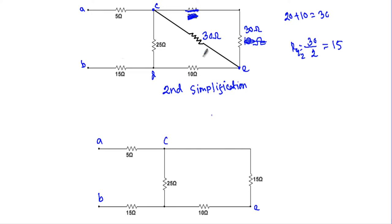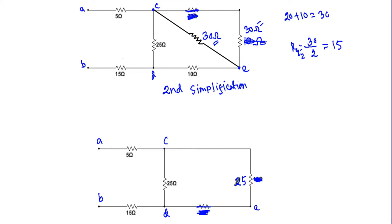Between C and E terminal, I have replaced the two 30 ohm resistances with 15 ohm. Now looking at the CDE branch, this branch has two resistors in series — 10 ohm and 15 ohm. I replace this branch resistance with 25 ohm. Between C and D we now have two resistances of 25 ohm connected in parallel, giving an equivalent resistance of 25 / 2 = 12.5 ohm.